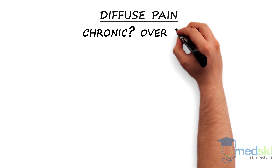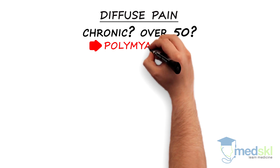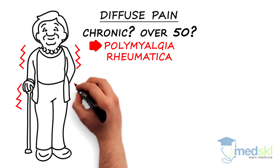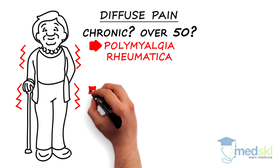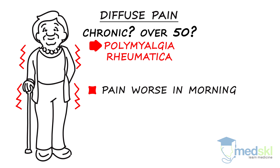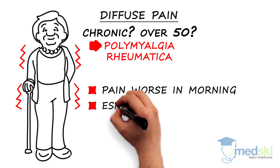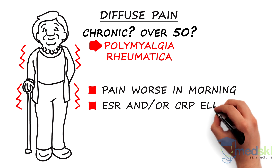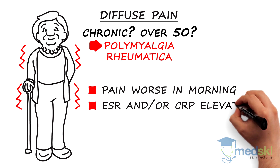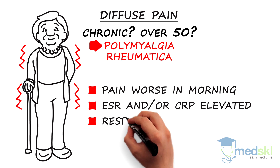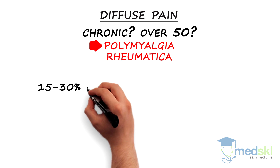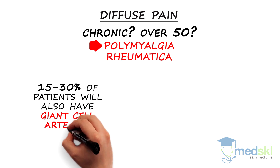Chronic diffuse pain in a patient over 50 years of age may be polymyalgia rheumatica. It presents as stiffness or aching in the upper arms and thighs. Pain is worse in the morning and improves with activity. Erythrocyte sedimentation rate and/or C-reactive protein are usually elevated. The pain is responsive to prednisone 15–20 mg daily.